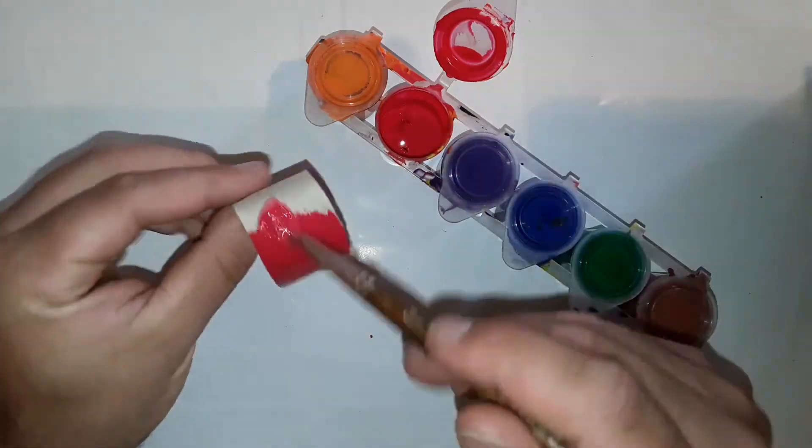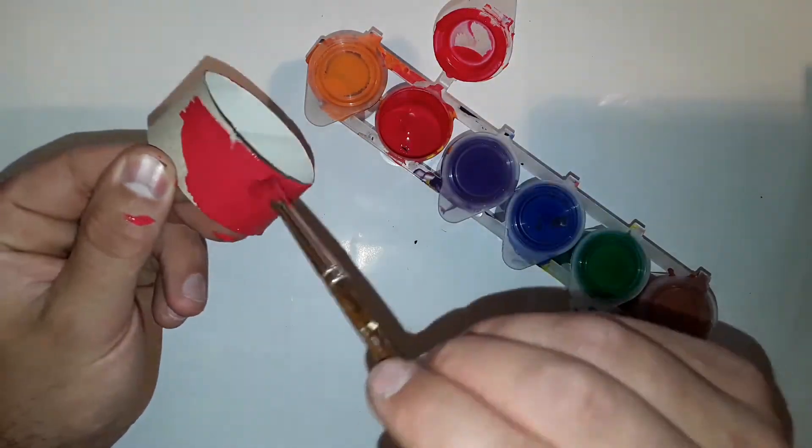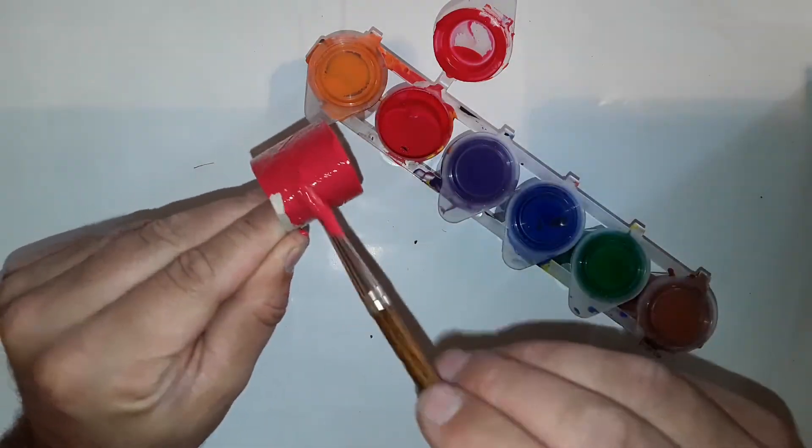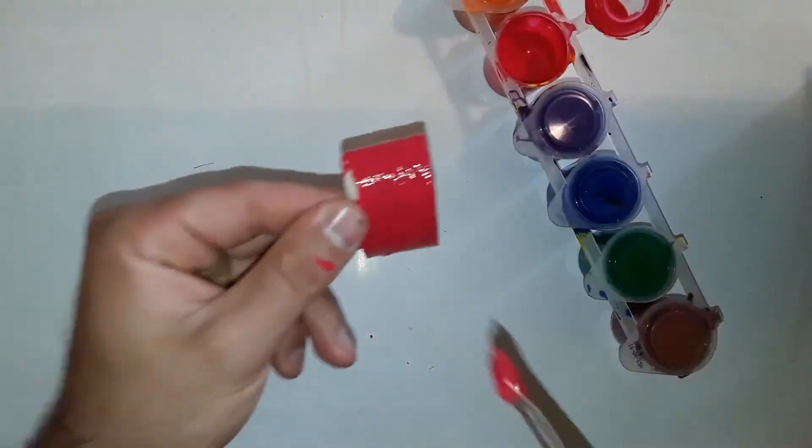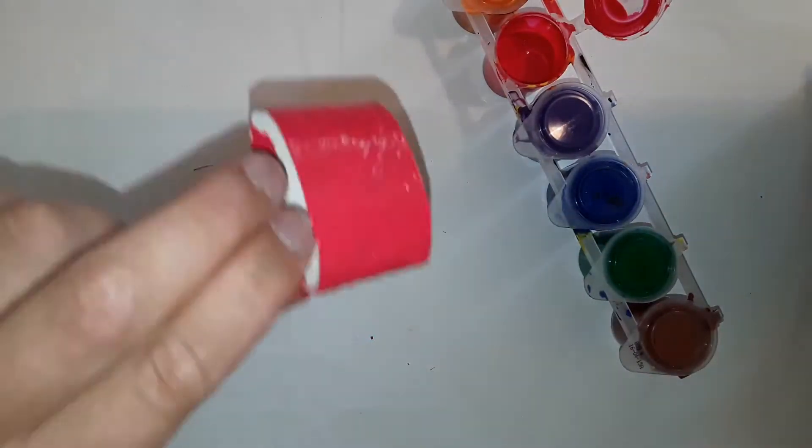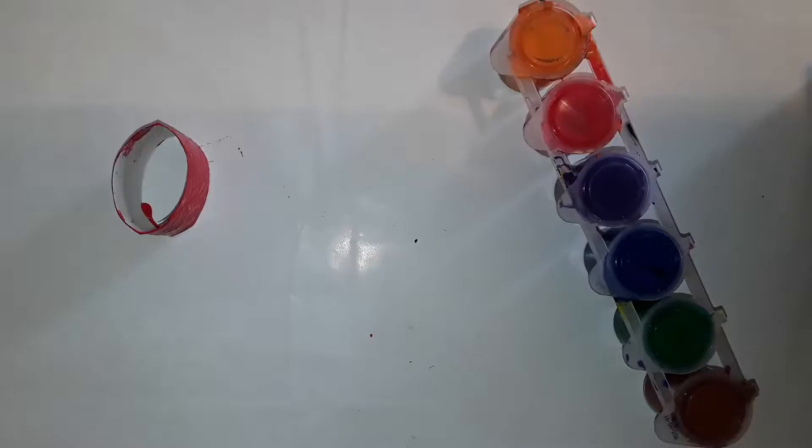Choose a color and paint the roll. You actually only need to paint the outside. Repeat this step for the other two parts. You can do them in different colors to make it nice and colorful.